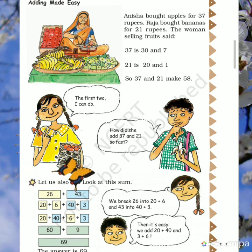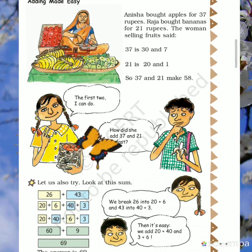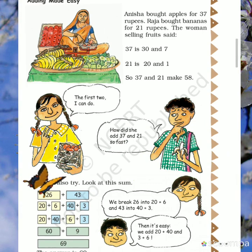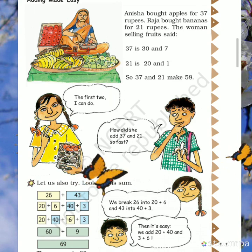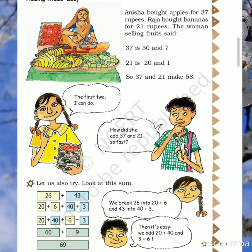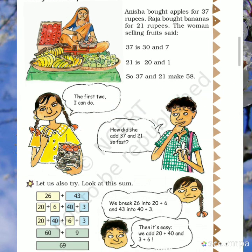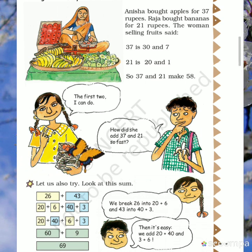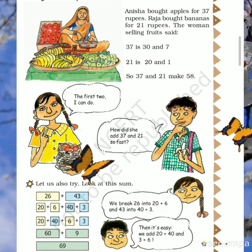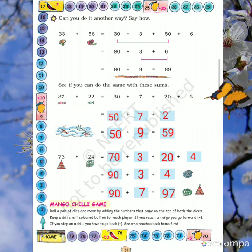See what shortcut method she applied. She broke 37 into 30 and 7, and 21 into 20 and 1. Then she added 30 and 20 to get 50, and 7 plus 1 is 8. So 50 plus 8 is 58. You also learn this shortcut method: first break both numbers into groups of 10s and 1s, then add the 10s together and the 1s together, and finally add the two results.